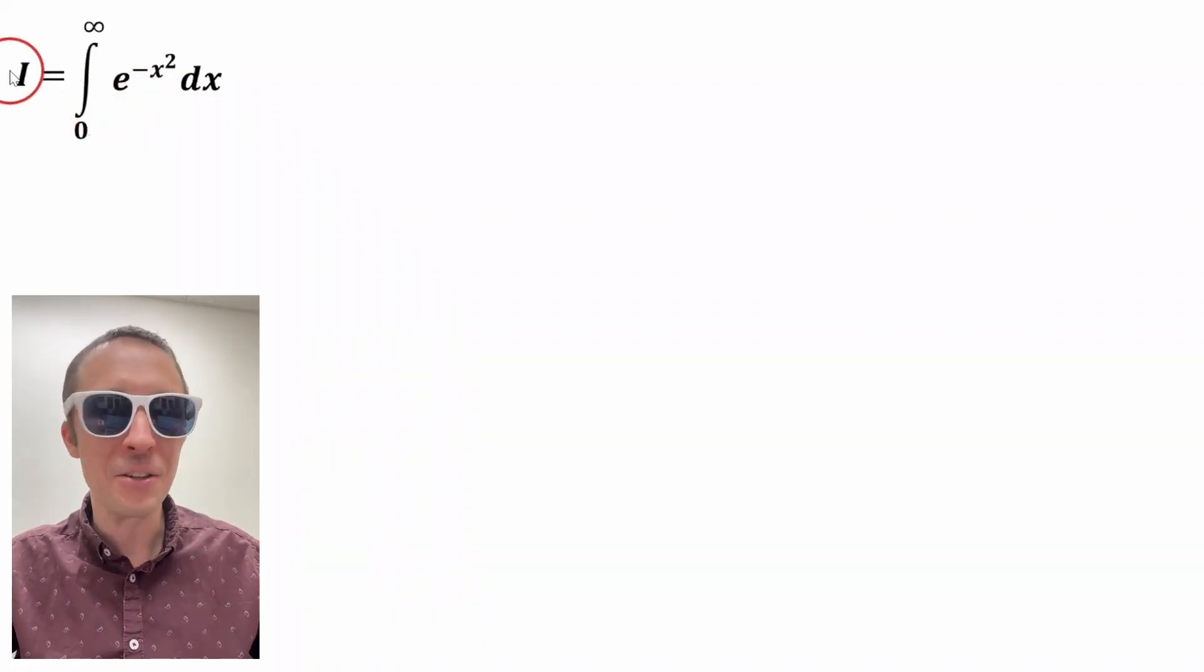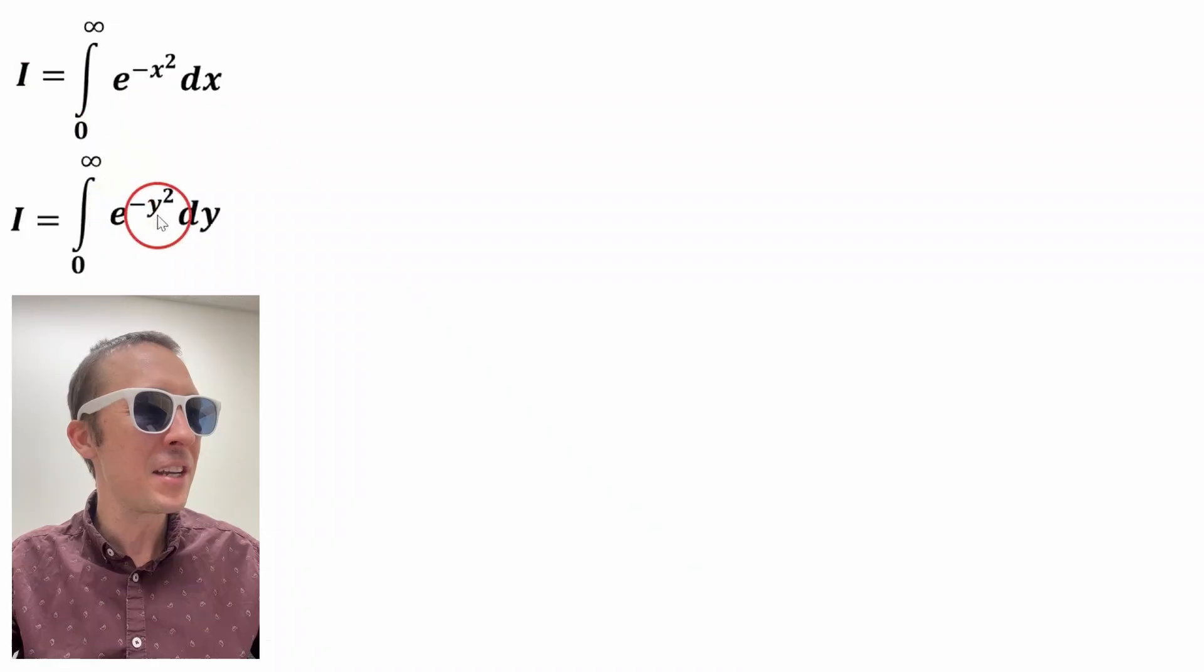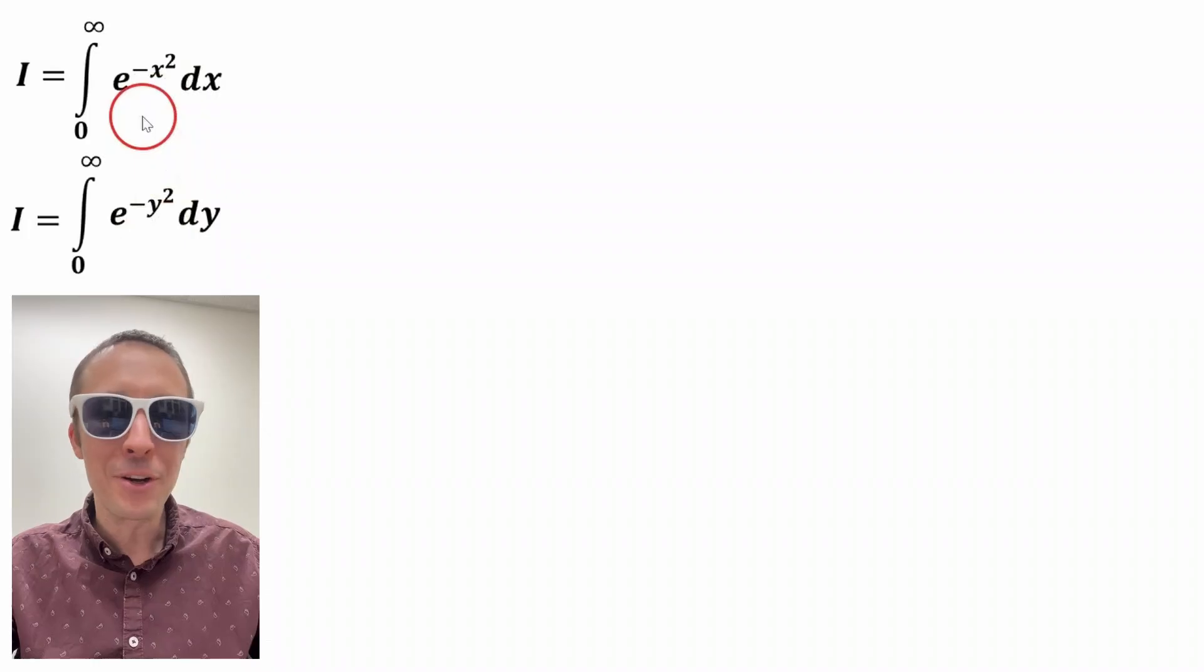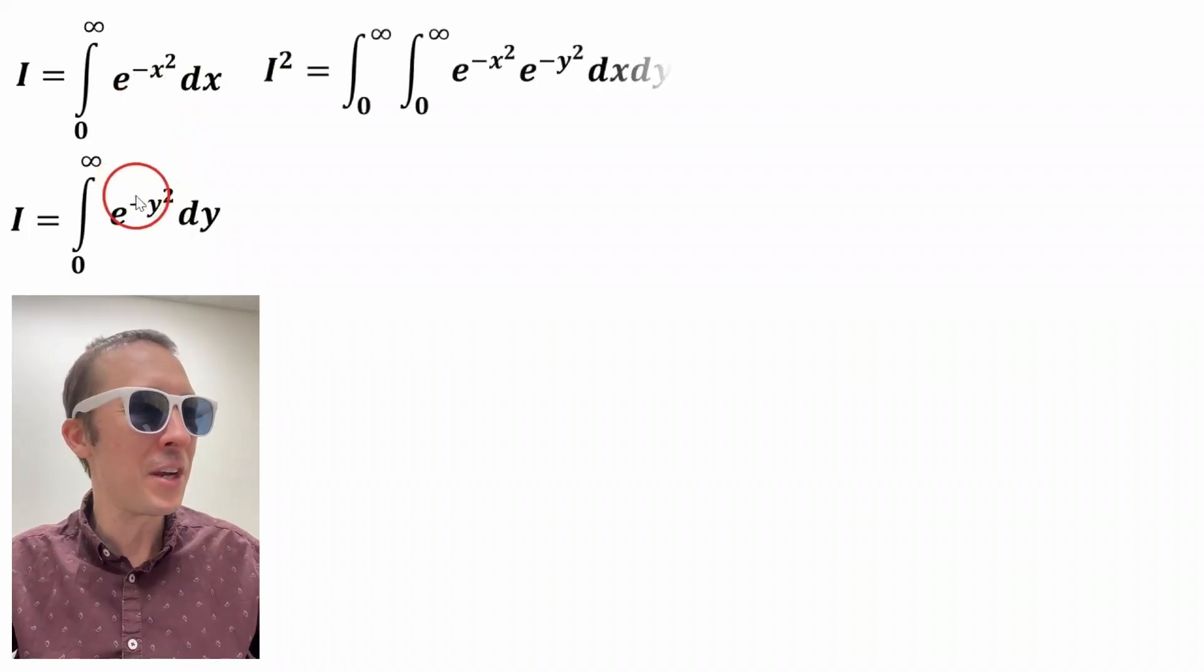And we're going to set this integral equal to I. And then we're going to rewrite it using y instead of x. That doesn't change anything. And we're going to multiply these two equations together.